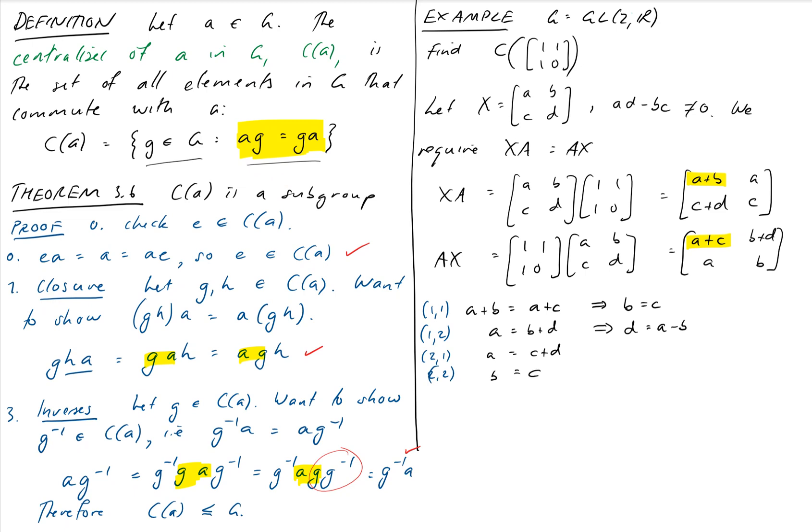Our two key pieces of information is that C equals B, and D equals A minus B. So our matrix X, therefore, is equal to A, B, B, A minus B.